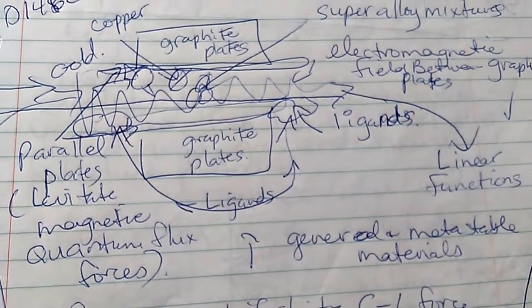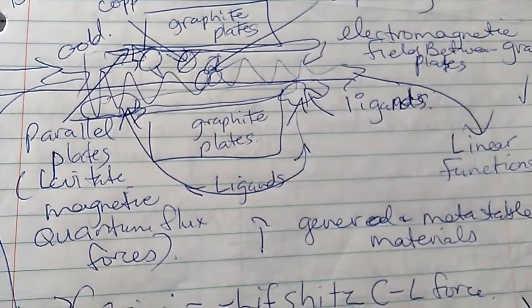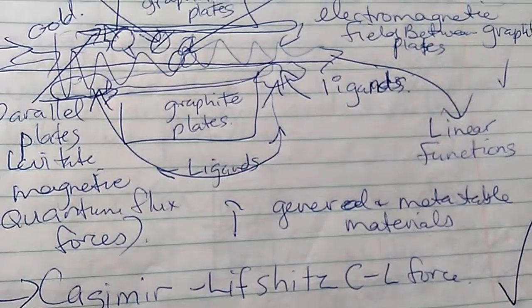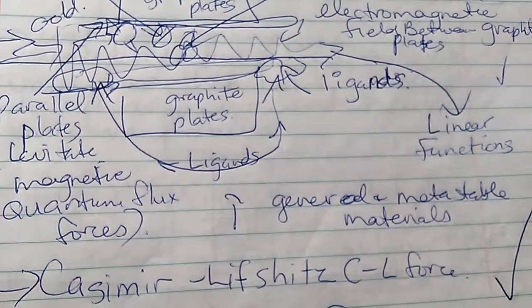There's ligands on either side of the graphite plates on the bottom one. And then it says parallel plates levitate magnetic quantum flux forces. And general and metastable materials go through there as well.